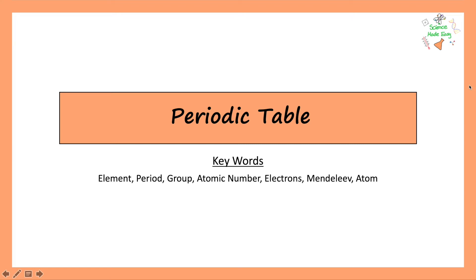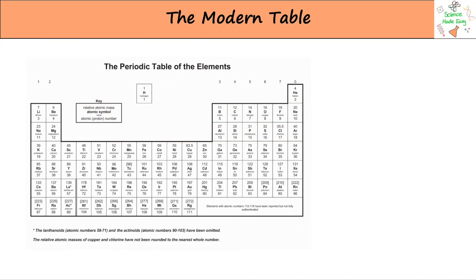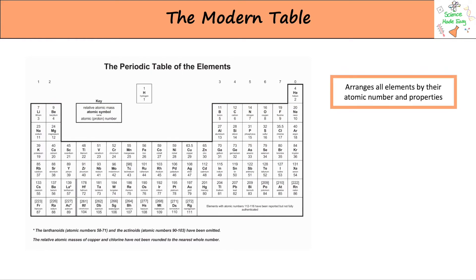Welcome to this video on the Periodic Table. Take a look at the keywords we use in this video. First let's look at the Modern Periodic Table — this is the one you'll recognise. It organises all of the elements into groups and periods. It's arranged by the element's atomic number and their properties. Elements in the same group all have the same characteristics.